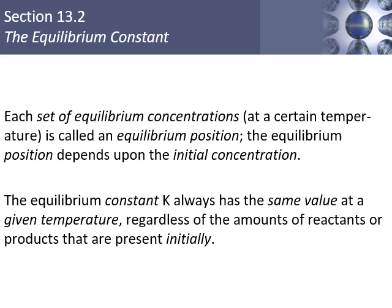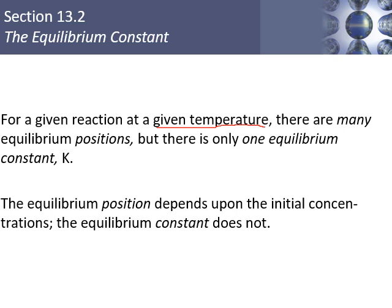Each set of equilibrium concentrations is called an equilibrium position. The equilibrium constant stays constant — that's why it's called a constant. The only way to change it is to change the temperature. At a given temperature there's only one constant, but there can be many equilibrium positions depending on the concentrations. The equilibrium position depends on the concentrations, but the constant does not — the constant depends only on temperature.